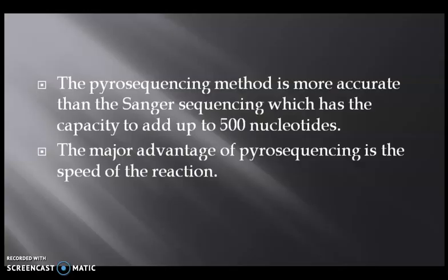The pyrosequencing method is more accurate than Sanger sequencing and has a capacity to add up to 500 nucleotides. The major advantage of pyrosequencing is the speed of the reaction.